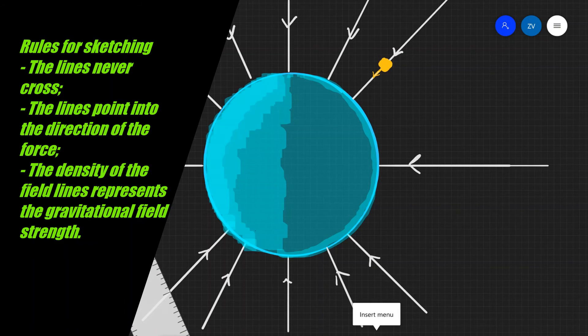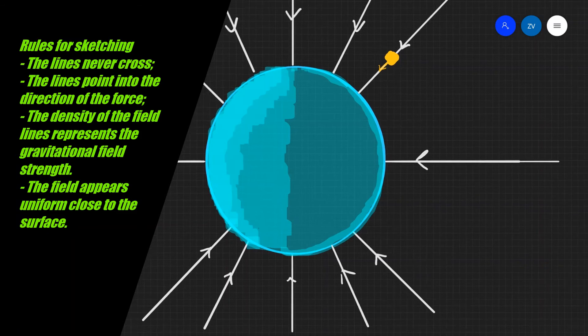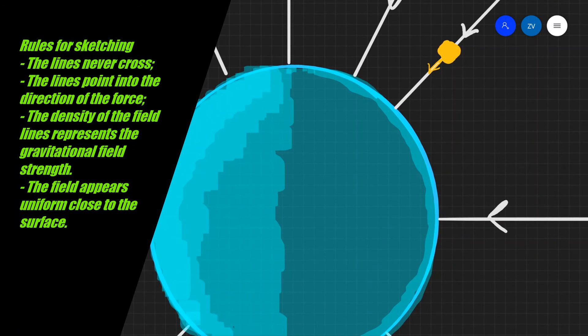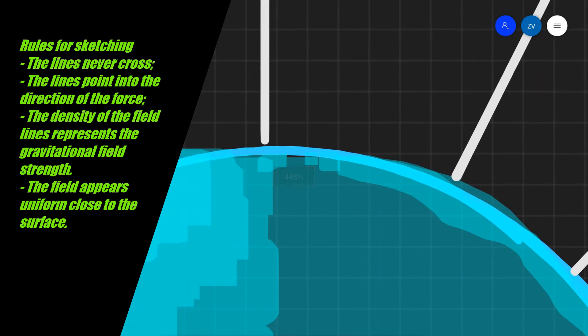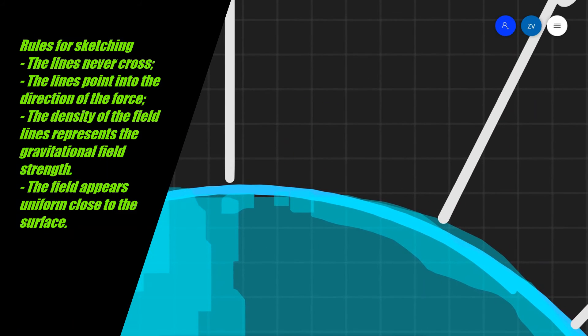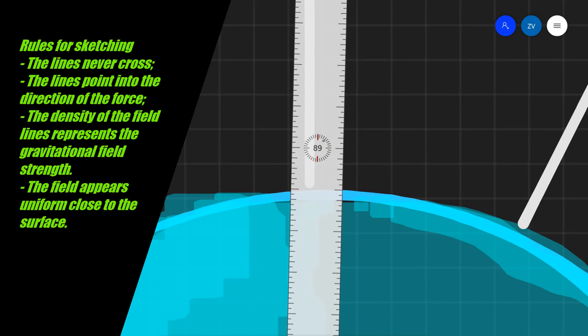Additionally, something really interesting is that the field lines appear uniform close to the surface of a planet. If we zoom in sufficiently—let's go to maximum zoom—and zoom in even further, the planet will appear to be flat. I know it doesn't in this case because I can't quite zoom that much, but the lines will be virtually parallel.